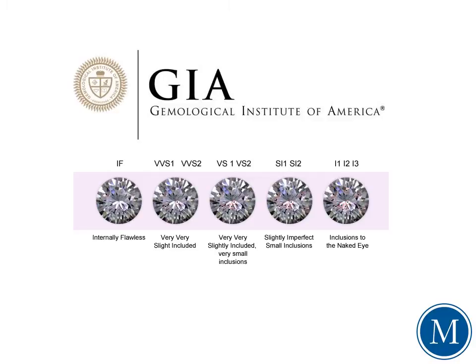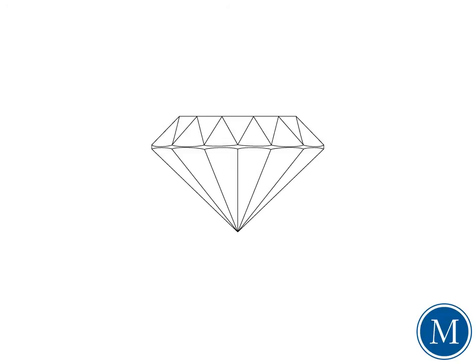Most inclusions, though, are actually so small they can only be seen under 10x magnification. For example, the flaws of diamonds classified as very, very slightly included, or very slightly included, are hard to see even under 10x magnification.